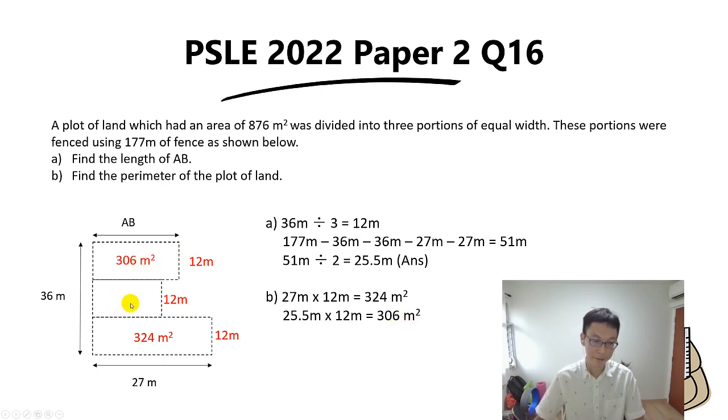So now can you find this rectangle? Yes, we can. We simply take 876 minus these two areas, we will get 246, and that's the area of this rectangle.